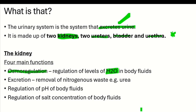The second function of the kidney is excretion. Nitrogenous waste, or metabolic waste, from your body is excreted by the kidneys. This second function is to remove nitrogenous waste — such as urea — through urine.